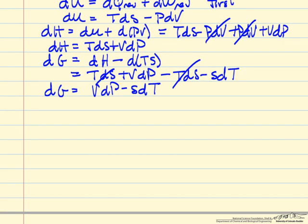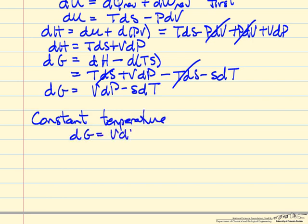And so what we're going to look at for a lot of our calculations is what happens if we look at changes at constant temperature. Then DG is VDP.